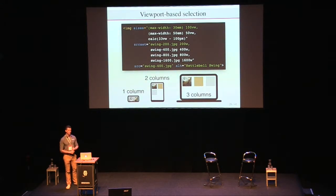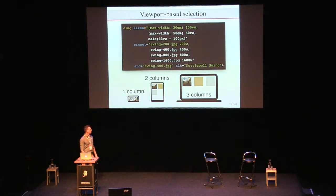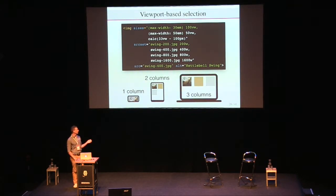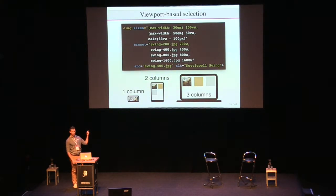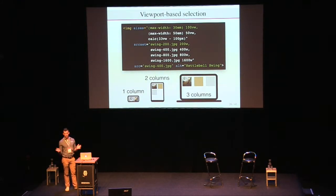With srcset and sizes, you can just specify: I have these images, and these are my breakpoints and sizes. Then the browser takes that into account along with the user's screen device pixel density, and selects an appropriate image to download. In this illustration, you have three different layouts — three columns for wide screens, two columns for medium screens, and one column for narrow screens. You may notice the smallest device doesn't have the smallest image; it's actually the tablets that have the smallest image here. So it's not as simple as bigger device equals bigger image.